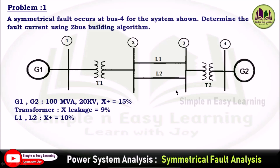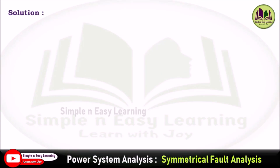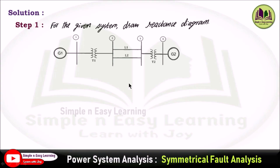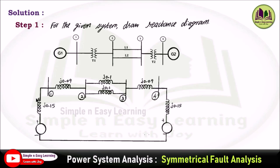Step one: for the given system, draw the reactance diagram from the single line diagram. We have a separate video for that — kindly refer to it. The reactance diagram includes generator reactance, induced EMF, transformer T1, lines 1 and 2, transformer T2, and generator G2. Values in per unit: generators G1 and G2 are j0.15, transformer T1 is j0.09, and the line is j0.1.